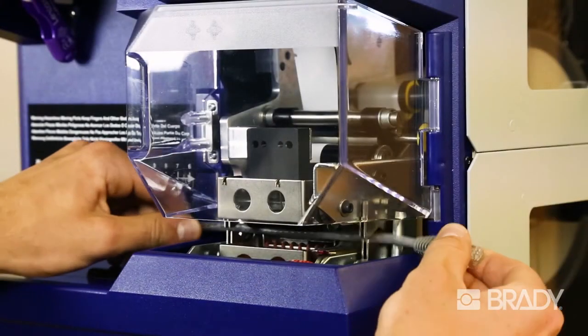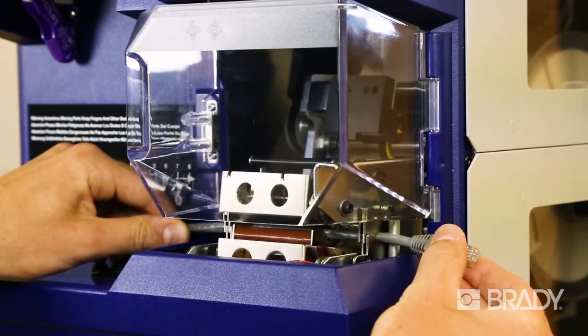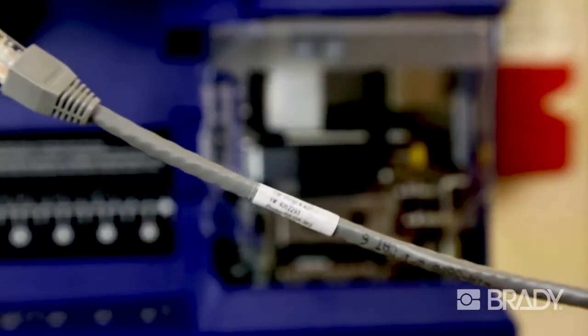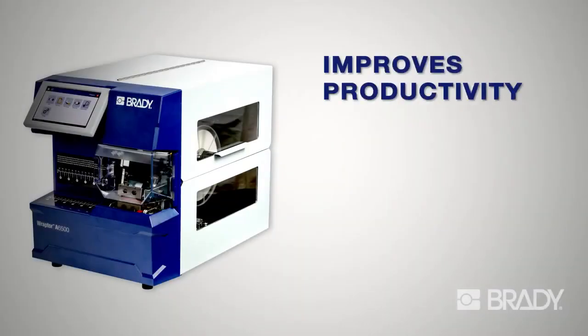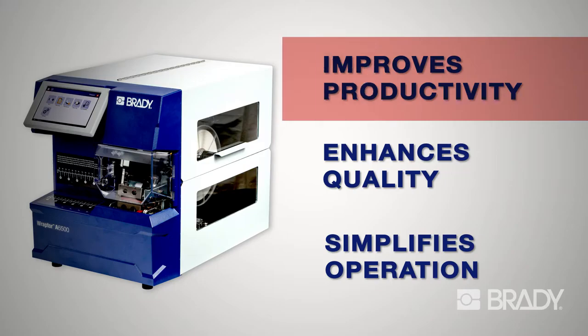The Raptor A6500 system combines the printing and application of labels in a single unit. It turns a series of labor-intensive, inefficient tasks into a modern, automated process that improves productivity, enhances the quality of your wire identification, and simplifies the process.